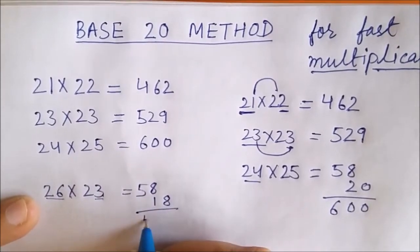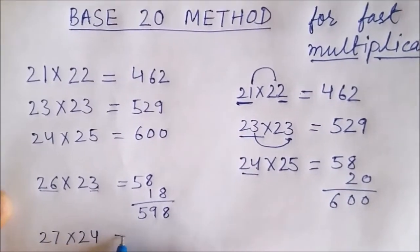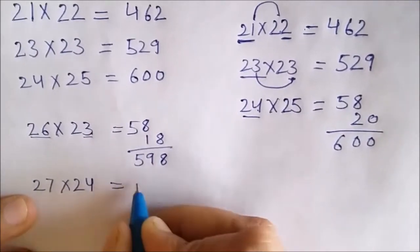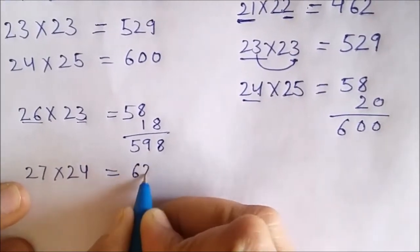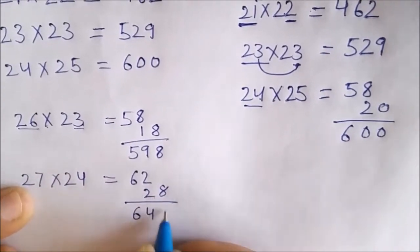If 27 is to be multiplied by 24. Yes, 27 plus 4 is 31. Double of 31 is 62. And 7 fours are 28. So, answer is 648.